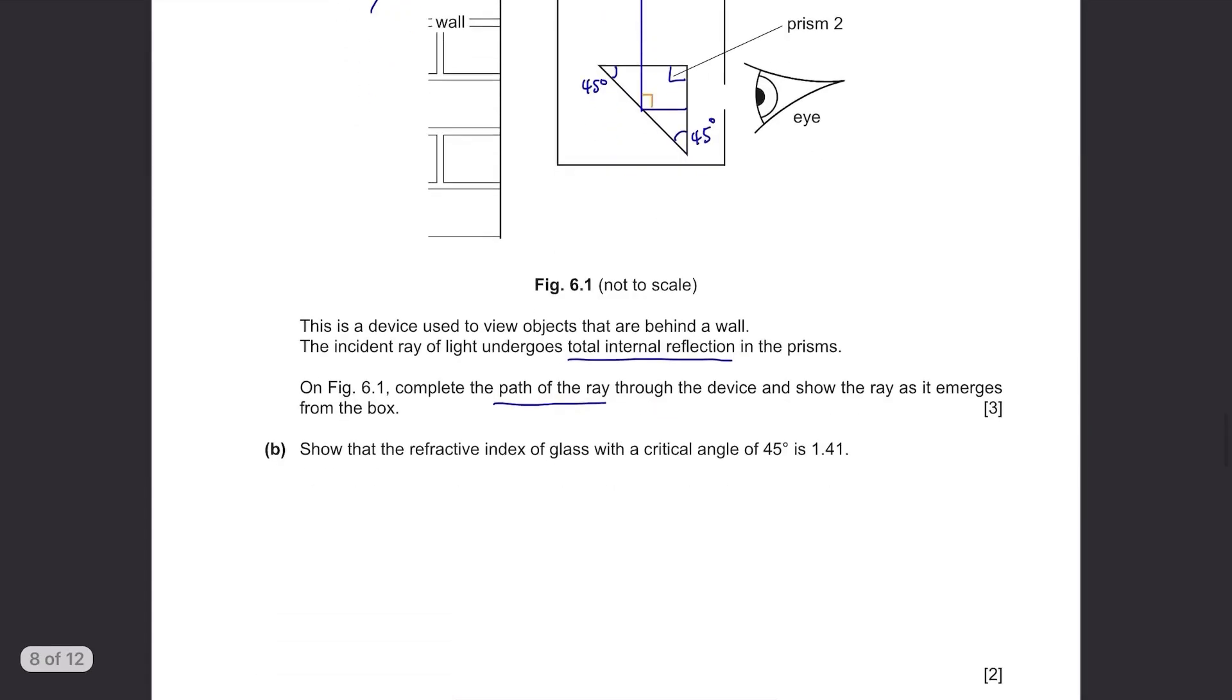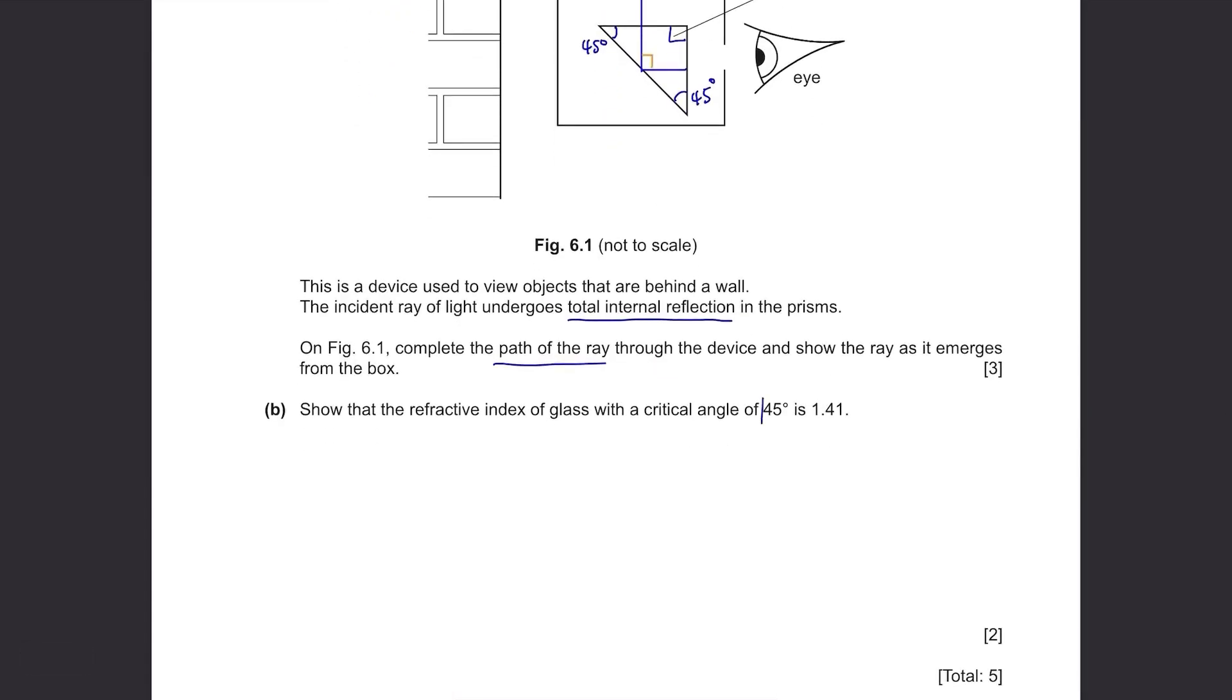Part B. Show that the refractive index of glass with a critical angle of 45 degrees is 1.41. We have a formula that connects the refractive index and critical angle: n equals 1 over sin c, where n is the refractive index and c is the critical angle. Since we need to show that if glass has a critical angle of 45 degrees, its refractive index is 1.41, substitute 45 degrees to this formula. 1 over sin 45 is 1.41, so it's shown.